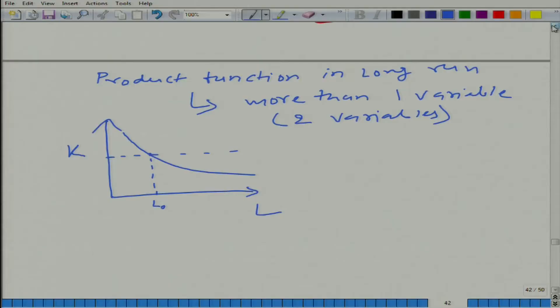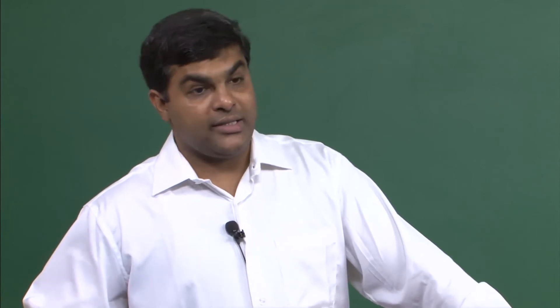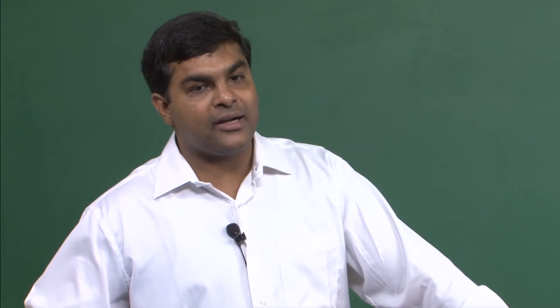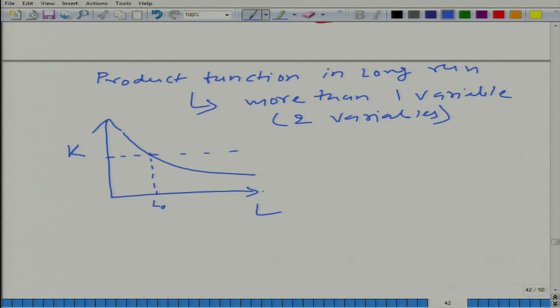L is on the x-axis — that is the convention typically used. Of course, you can put K on the x-axis and L on the y-axis; nothing is sacrosanct about it. This is unlike the demand curve, where we always have price on the y-axis and quantity on the x-axis. Here, it is convention but we are not that particular about it — nothing would change if we switch the axes.